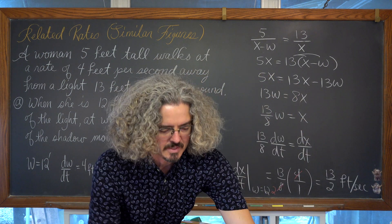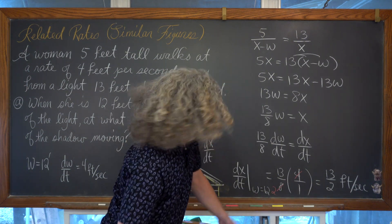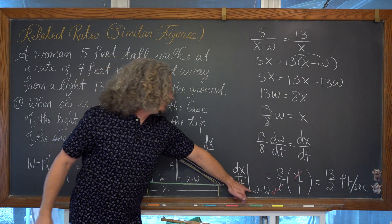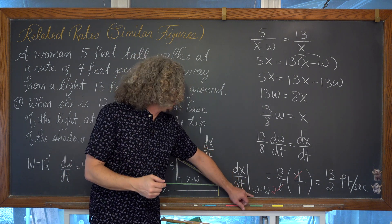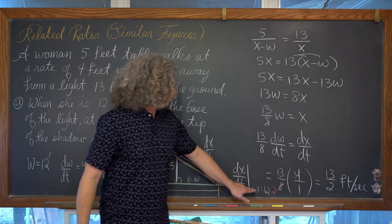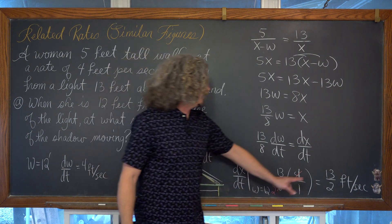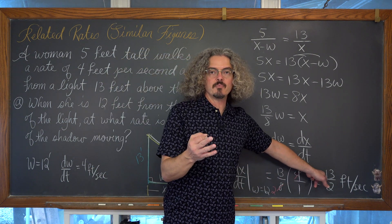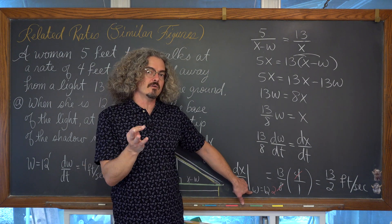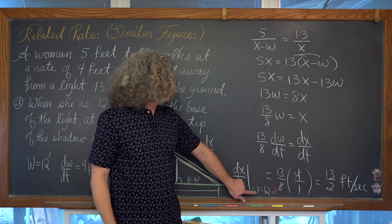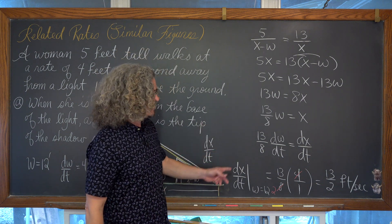Let's do a quick double check. Even though we didn't actually need to use the specific distance of w, we should include that in our derivative notation — because usually these rates of change in related rate problems are unique to a certain fixed value, so always use that notation to be safe.